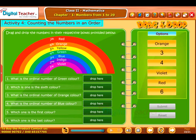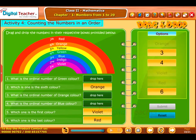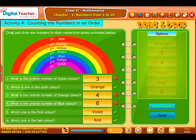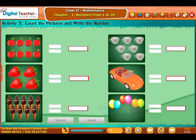Now, we are going to do one more activity on counting numbers in an order. Count the things in the given pictures and write their numbers in the blanks provided. Click submit to verify your answer.